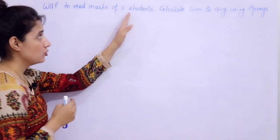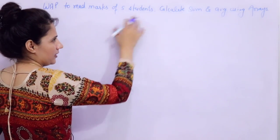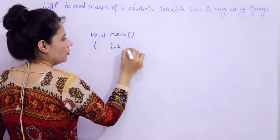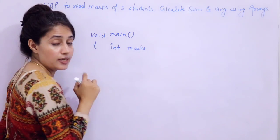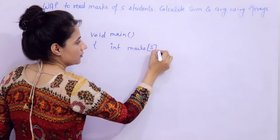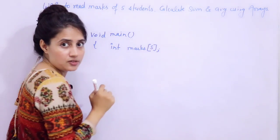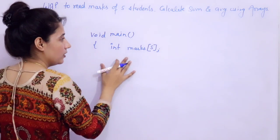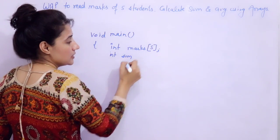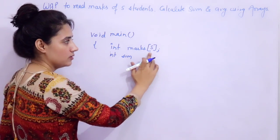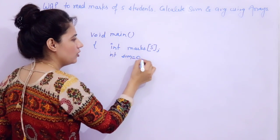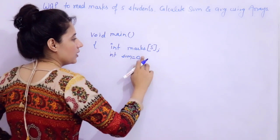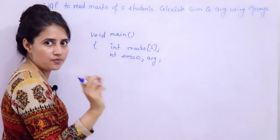First of all, we will read marks of 5 students. I am not writing the complete program like header file and all — I will show that on my laptop. I am just writing from the main function. So first, declare the array. The name of the array is 'marks' because we are taking marks of 5 students, so size is 5. Now we have to calculate sum and average, so we need 2 variables: first is 'sum', which we initialize to 0 — otherwise it will take any garbage value and give incorrect results — and another variable is 'average'.